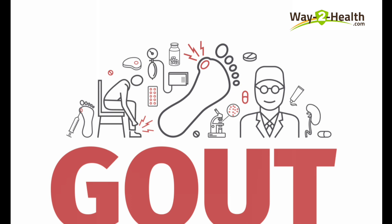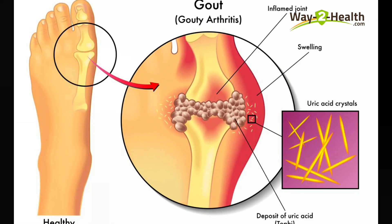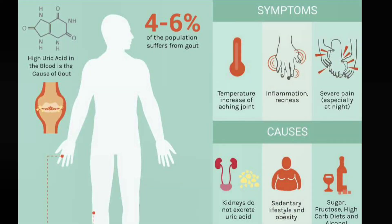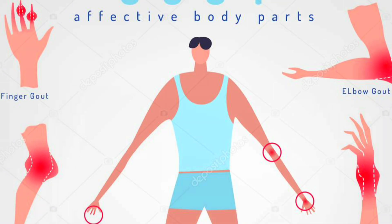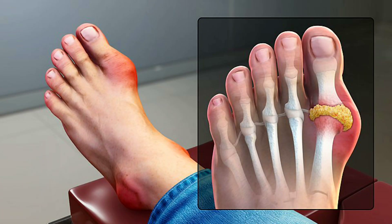As you can see, uric acid crystals are sharp-edged; deposition of these leads to severe inflammation of the joints. It can be so severe that it can make affected people unable to move their limbs. If someone with gout is not treated early and promptly, it can cause chronic or prolonged pain, severe debility, and deformity of the small joints of the foot and hand.